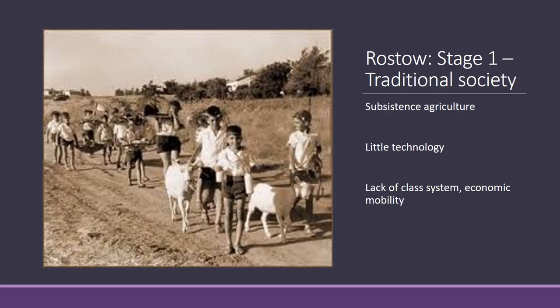Stage one is the traditional society — very much based on subsistence agriculture, very little technology, and a lack of a class system or economic mobility. This is still quite common in rural areas in the developing world, whereas urban areas tend to have moved on to stage two or stage three.